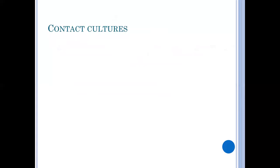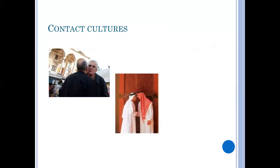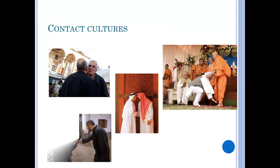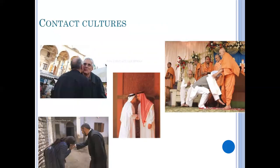There are contact cultures and non-contact cultures. Contact cultures include Southern Europe and the Middle East, where people tend to stand closer to each other, touch during conversation, and maintain eye contact longer. For example, in some Western countries people kiss each other; in Arab countries they also kiss each other on the face; in India, when meeting a higher-ranking person, they may touch their feet.